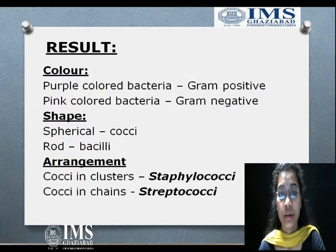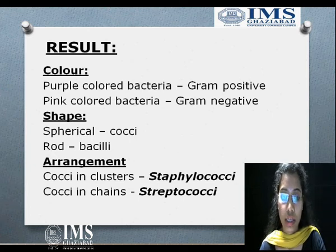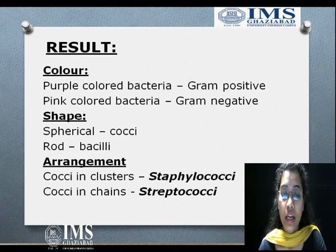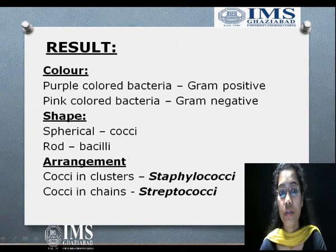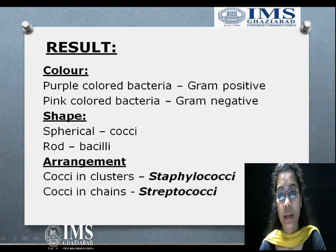Then result: when you see the result, when you see the slide under the microscope, there are two types of colonies you will see — one is pink colored and one is purple colored. If you see purple colored bacteria, it means that bacteria is gram-positive. If you see pink colored colonies under the microscope, that colony refers to gram-negative bacteria.